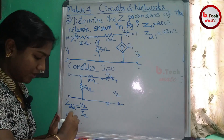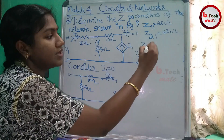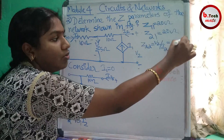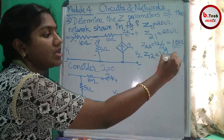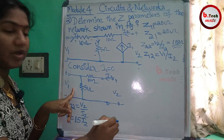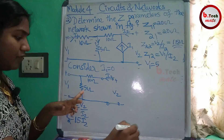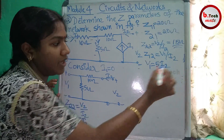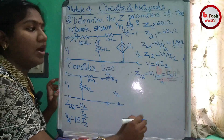The total voltage V2 equals 15·I2, since 10 and 5 ohm are in series giving 15 ohm. Therefore Z22 equals V2 divided by I2 equals 15 ohm. Now Z12 equals V1 divided by I2. V1 is the voltage across the 5 ohm resistor, so V1 equals 5·I2, giving Z12 equals 5 ohm.